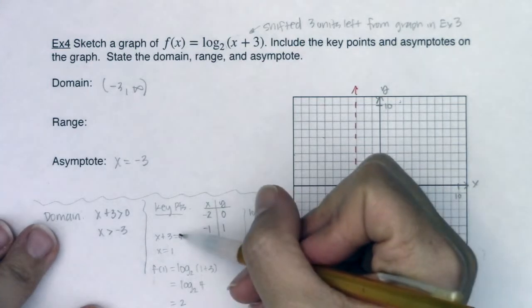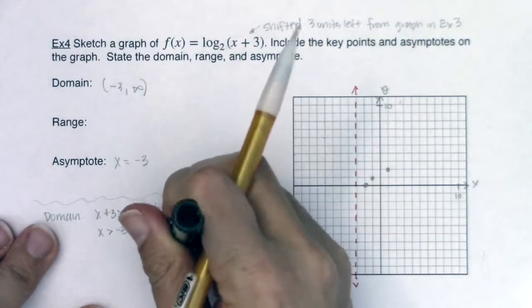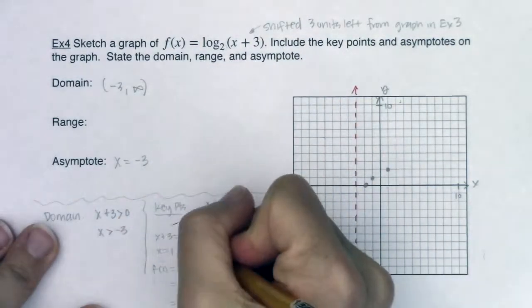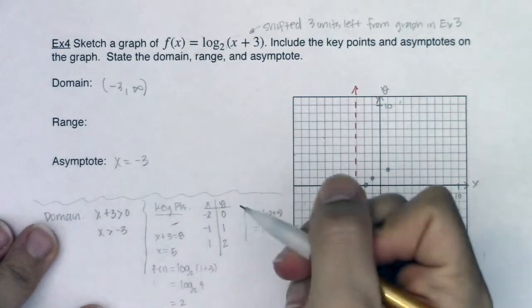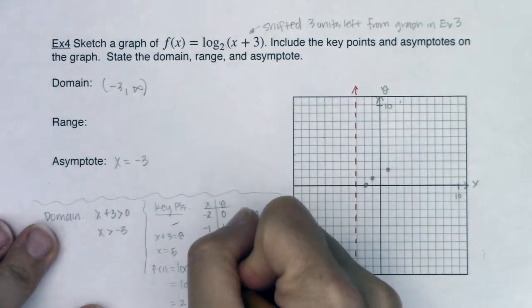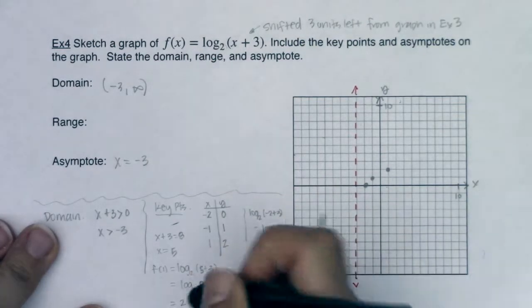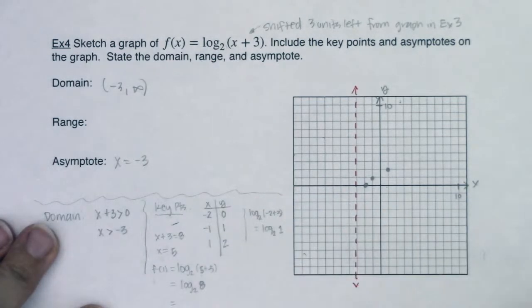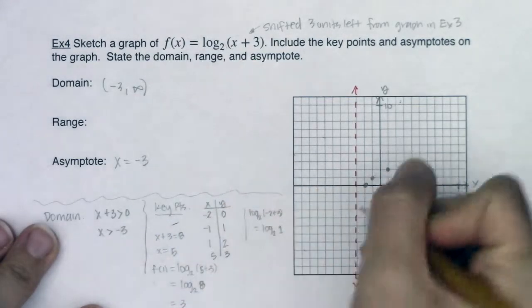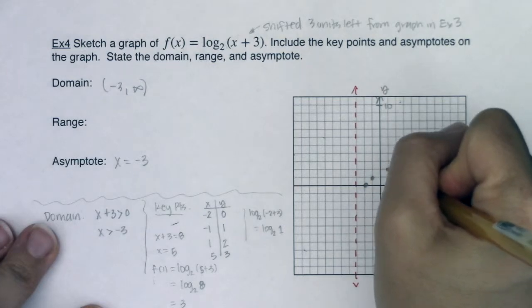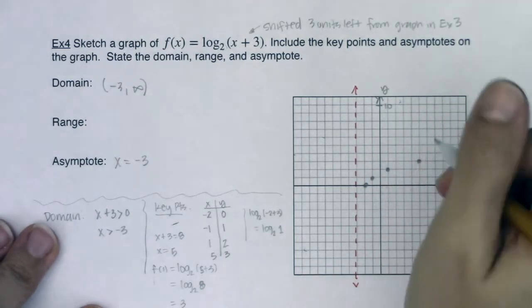So the next power of 2 that I want my argument to be equal to is 8. So I will change this to 8. If x plus 3 is equal to 8, that means x will equal 5. This will then become log base 2 of 5 plus 3, which will be log base 2 of 8. And log base 2 of 8 would be 3. So when I plug 5 in, I get 3 back out. There we go.